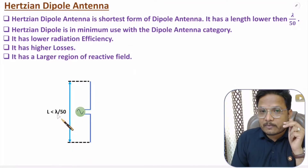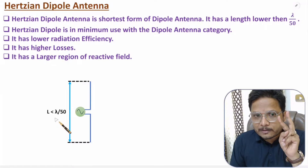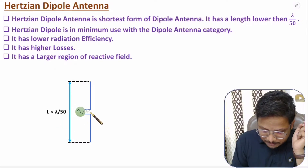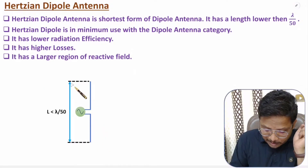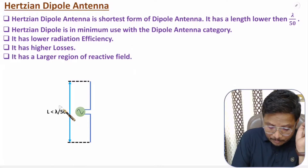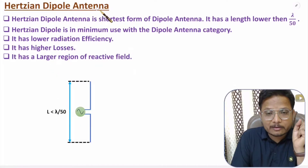First of all, one should know that in a dipole there are two poles. You can observe here with the generator — this is the first pole and this is the second pole. The total size of the dipole is lower than lambda by 50 for the Hertzian dipole.